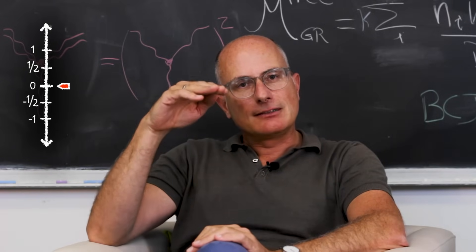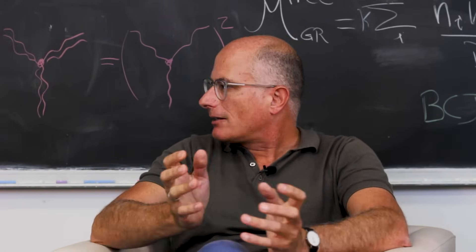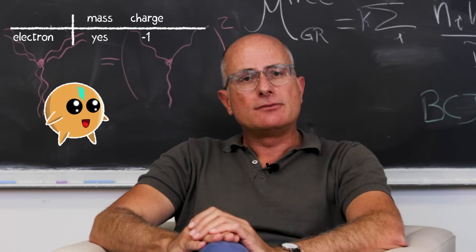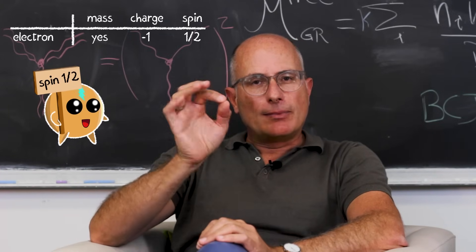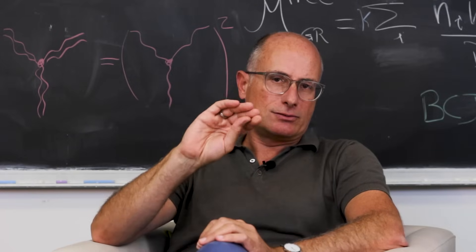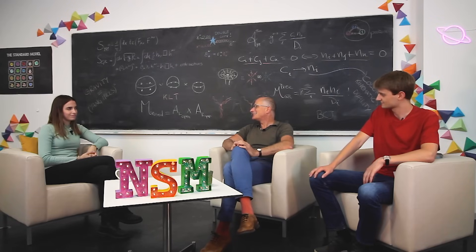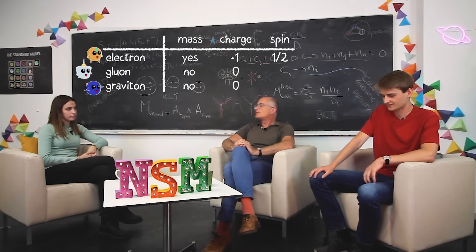Only certain discrete values of spin are allowed. Spin is an angular momentum. The electron, for example, carries spin one-half, which means this angular momentum can only take one value and it can turn in this or the opposite direction. Coming back to your question, gravitons and gluons differ in their spin: gravitons have spin two, gluons spin one.